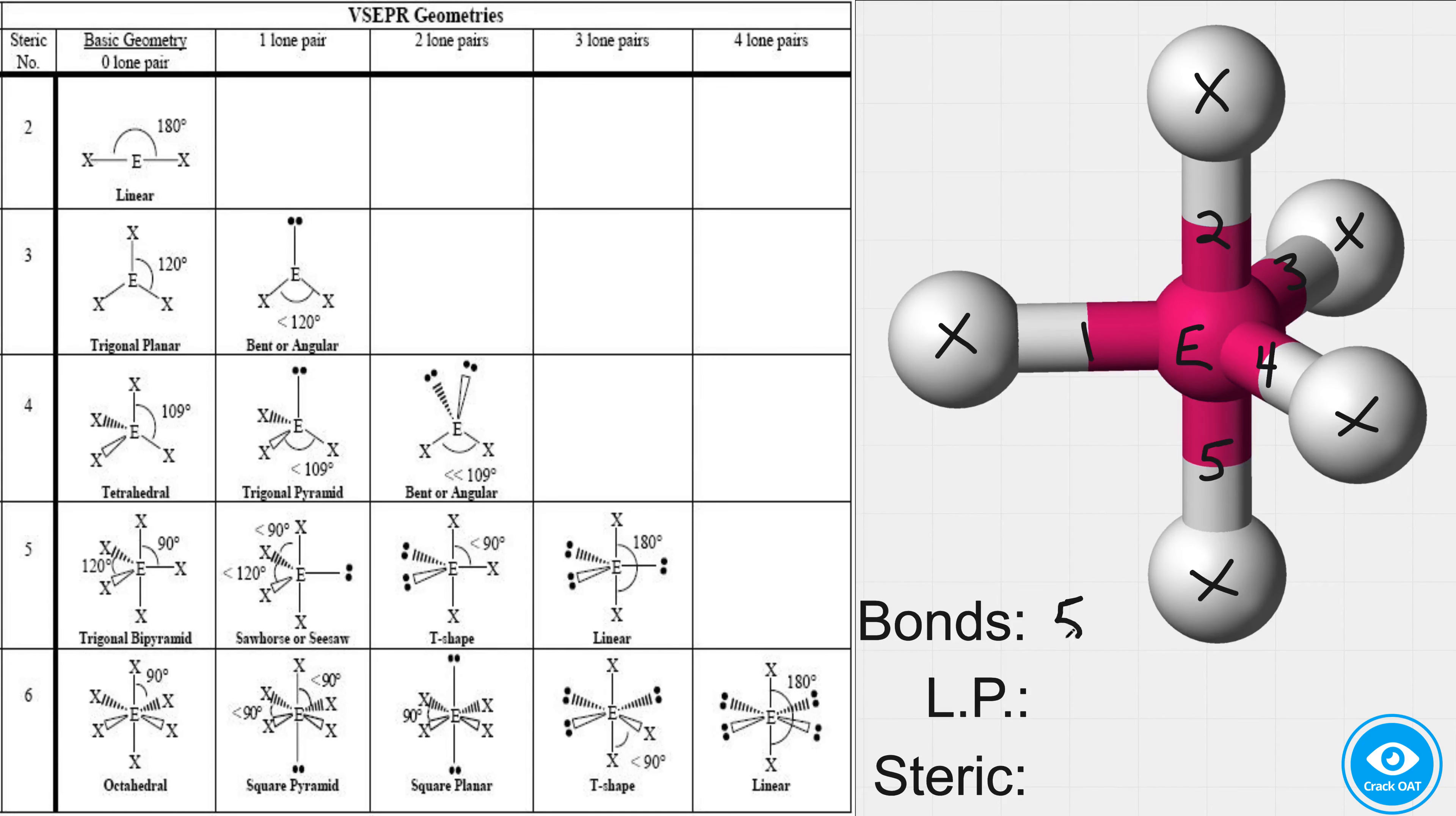So we have five bonds, zero lone pairs, the steric number is five.